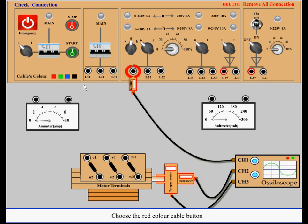Choose the red color cable button. Connect L12 to one terminal of the ammeter. Connect U1 to the other terminal of the ammeter.